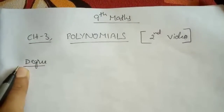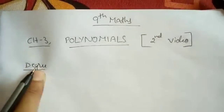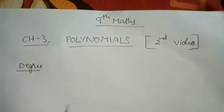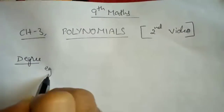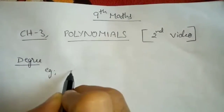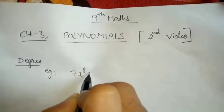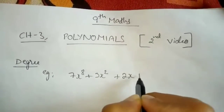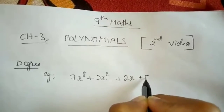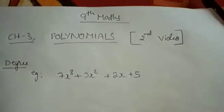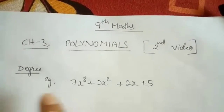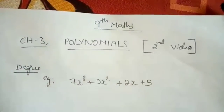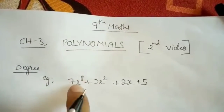Now we will learn what is degree. Degree means the highest power. So, if you take a polynomial, for example, degree means the highest power in this polynomial — the highest power of the variable.